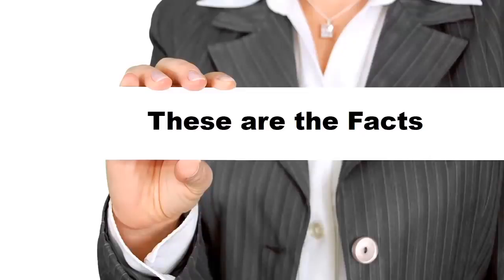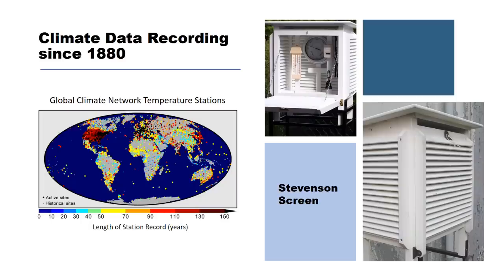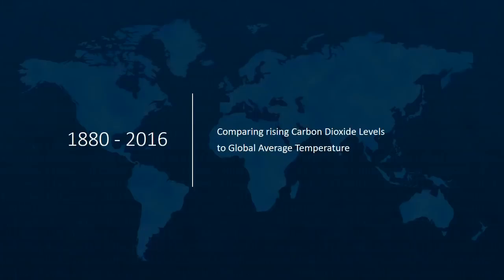We can now look at the facts. There are two key dates. 1750 marks the start of the Industrial Revolution, when mankind mined and burned fossil fuels, releasing carbon dioxide into the atmosphere. 1880 marks the time when climate data started to be systematically recorded worldwide, using equipment such as the Stevenson screens depicted. As can be seen from this map, the coverage of recording equipment has gradually increased since 1880. We will start our analysis at 1880, up until the end of 2016.